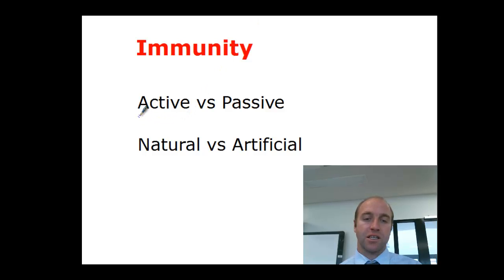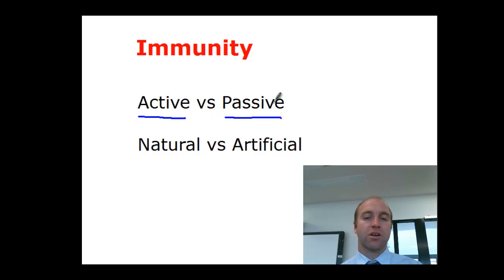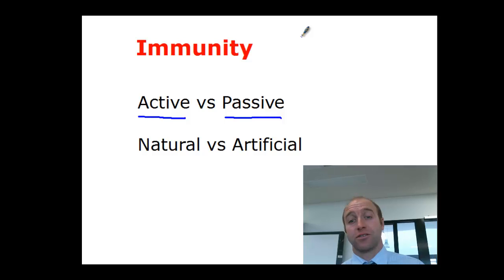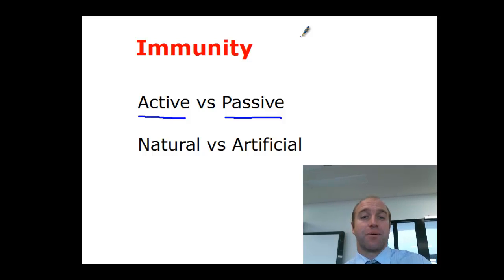I want to consider firstly the words active and passive. When we're talking about these two words, active means able to do it ourselves. So if we're talking about antibodies, able to produce antibodies ourselves. Passive is that we're not producing them ourselves — someone else is doing it for us.